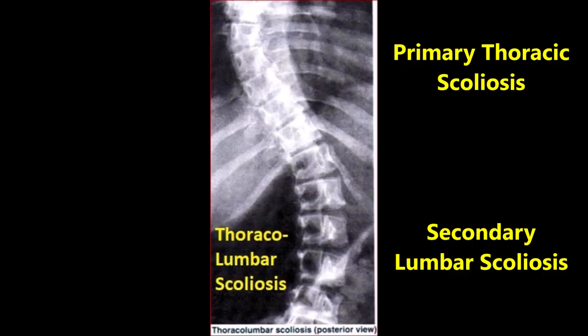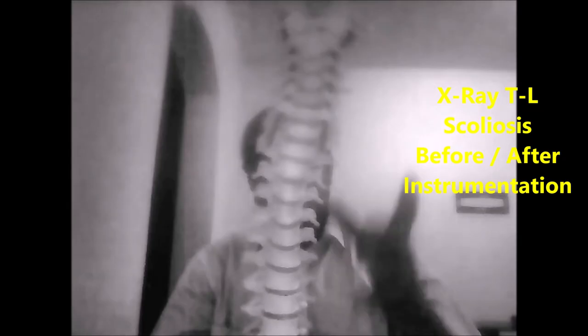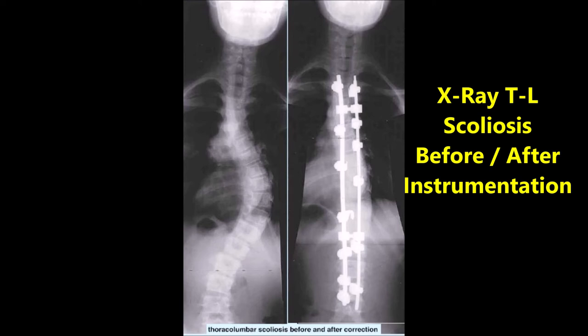This is an x-ray of the thoracolumbar spine showing thoracolumbar scoliosis. This is an x-ray of the thoracolumbar scoliosis before surgery and the result after surgery — note the increase in height.